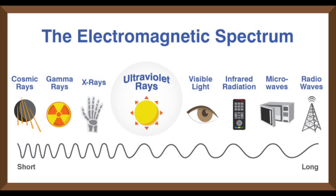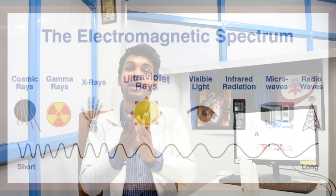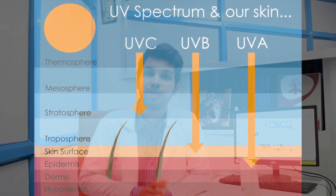UV rays जो sun से आते हैं ये electromagnetic spectrum को belong करते हैं, जहाँ UV rays, microwaves, visible rays, infrared rays और कई और प्रकार के rays होते हैं। UV rays तीन प्रकार के होते हैं - UV-A, UV-B और UV-C।